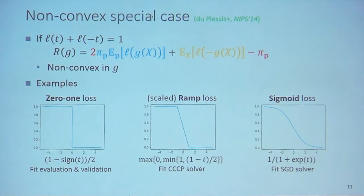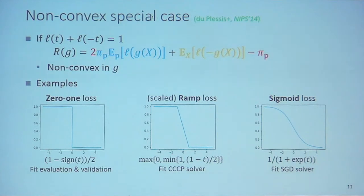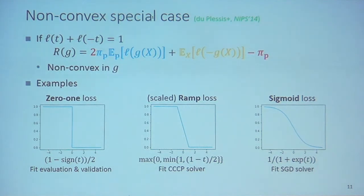Before that, we first derive a non-convex special case for PU learning. If the loss function satisfies the symmetric condition, namely L(t) + L(-t) = 1, then we can derive the risk estimator in this form.